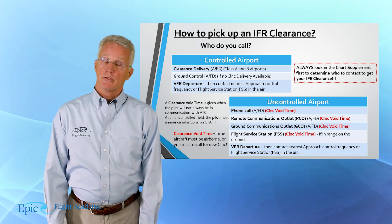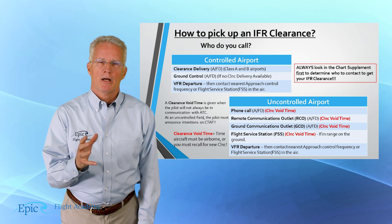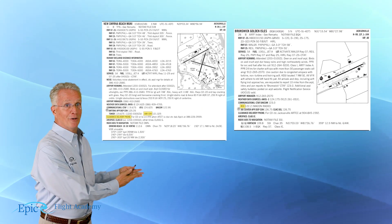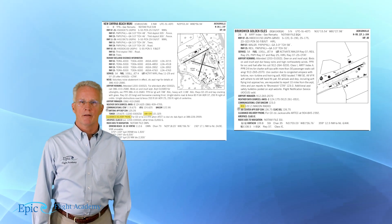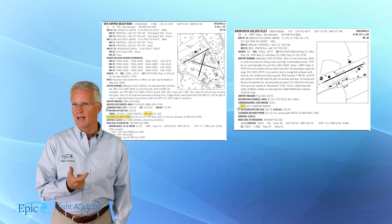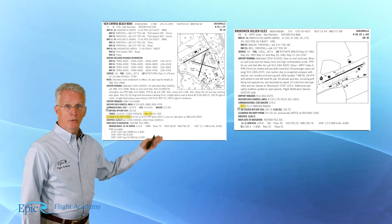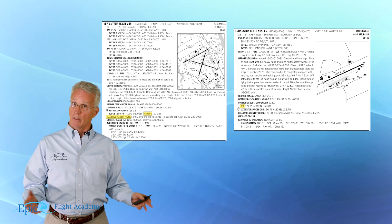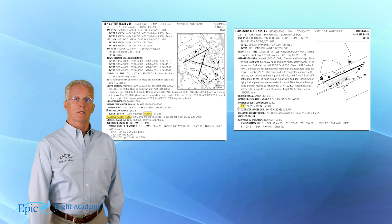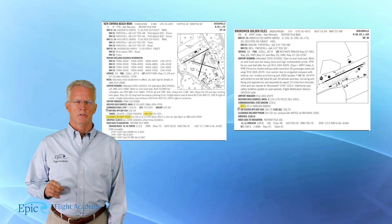The other way to receive a clearance at an uncontrolled airport is through an RCO, a GCO, or flight service. Review this in detail with your flight instructor. On the slide you can see an excerpt from the chart supplement. On the left is a tower-controlled airport — New Smyrna Beach — and on the right is a non-towered airport — Brunswick Golden Isles. New Smyrna Beach does not have a clearance delivery frequency; you pick it up over ground. At Brunswick Golden Isles, you pick it up through an RCO.